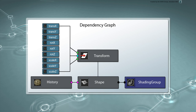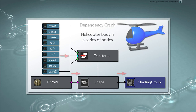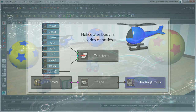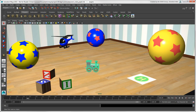Maya is similar in that it is also built on a network of nodes, called the dependency graph. It gets its name from the connections between the nodes, each one depending on another's information. Instead of being object-oriented as Softimage is, each object in Maya is actually a series of nodes. And unlike Softimage, this node graph is directly exposed in Maya's interface.